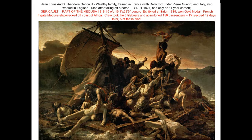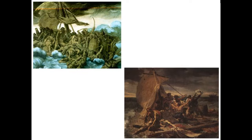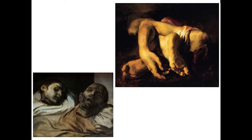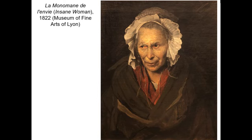Géricault was so obsessed with accuracy that he had the actual raft disassembled, brought to his studio, and rebuilt so he could paint from it. He also did shocking studies: alternate composition ideas, and still lives of severed heads and body parts from a morgue, literally trying to capture the real feeling of dead and decaying flesh. It's much darker in tone than what you'd expect from a neoclassical artist. He also painted portraits of people housed in insane asylums — that work has a darkness almost like Velázquez. Both neoclassical and romantic artists are skilled at accurate proportion and detail; it's really the tone, focus, and emotional impact that differ.